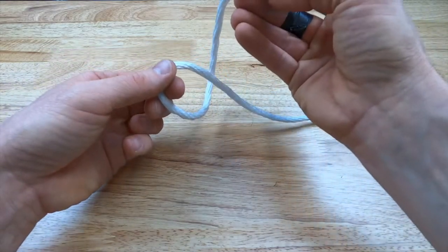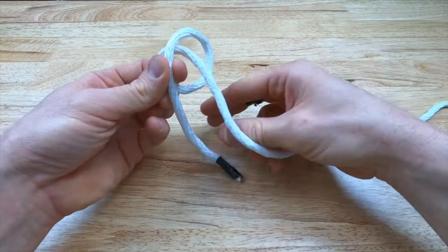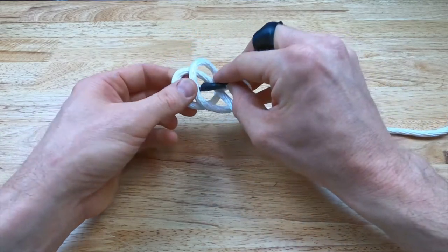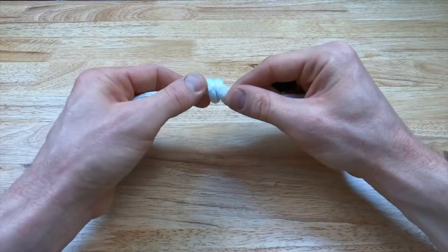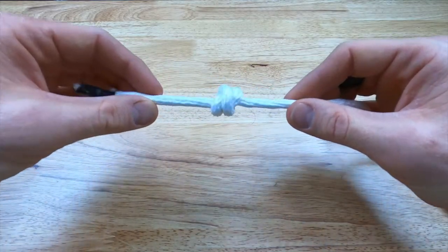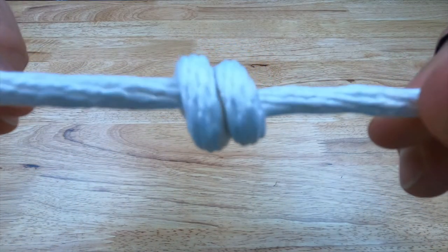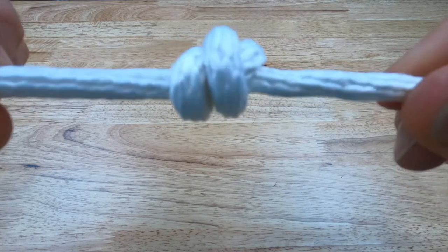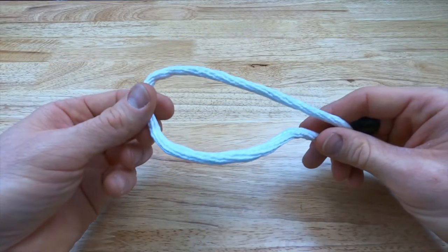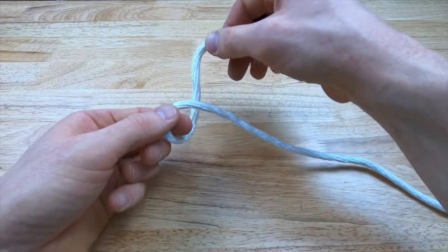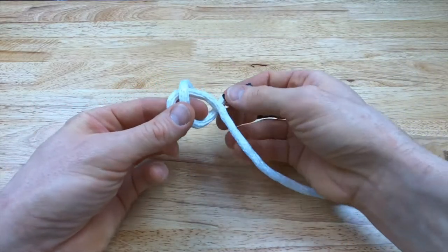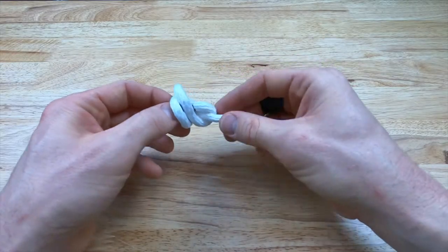The barrel knot is a friction knot often used as a stopper at the end of lines. It can be used to stop the end of the line from fraying or to stop things from coming off the line. The double barrel knot, which we'll be going over later in this video, is a common knot used in climbing. And the barrel knot is also one half of the double fisherman's knot.